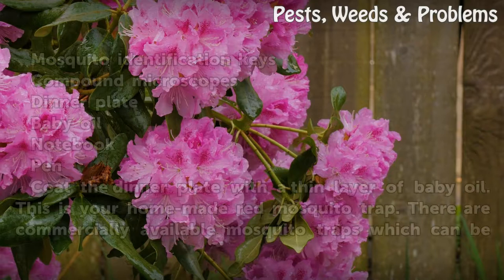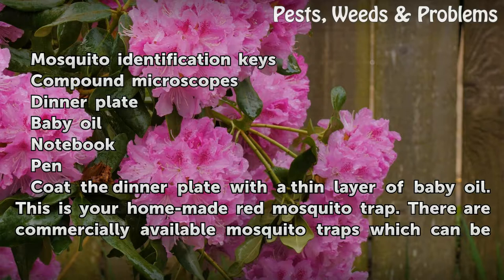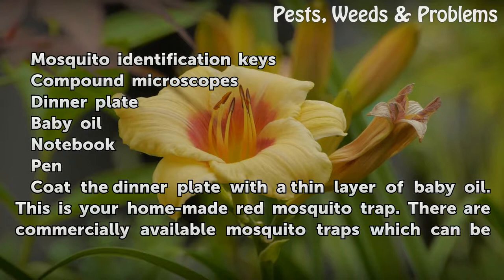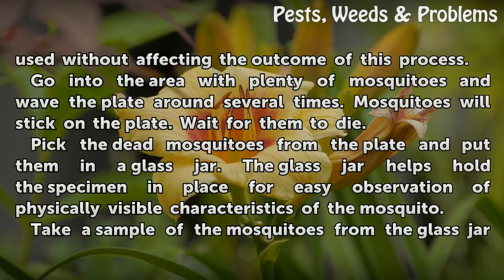Things you'll need: Mosquito Identification Keys, Compound Microscopes, Dinner Plate, Baby Oil, Notebook, and Pen. Coat the dinner plate with a thin layer of baby oil. This is your homemade red mosquito trap. There are commercially available mosquito traps which can be used without affecting the outcome of this process.